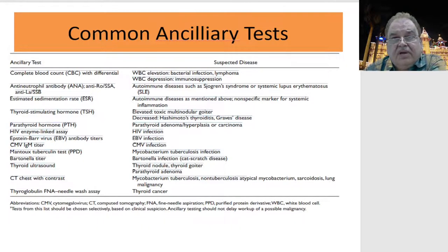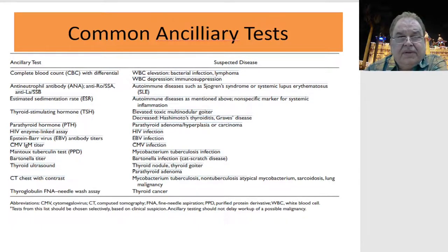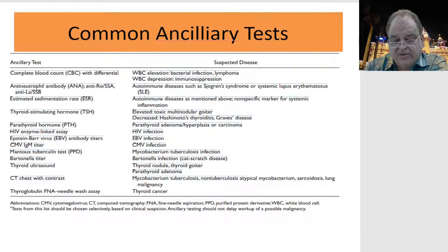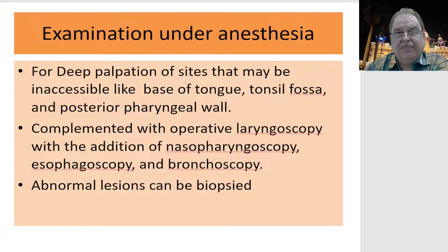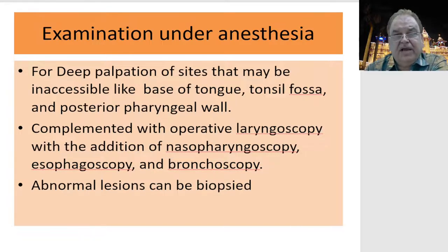A few common ancillary tests can be carried out — thyroid hormones, thyroglobulin for carcinoma of the thyroid. Sometimes examination under anesthesia is needed, especially for deep palpation sites like the base of tongue, tonsil, or posterior pharyngeal wall, combined with operative laryngoscopy and biopsy to find the exact cause.